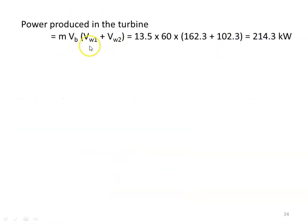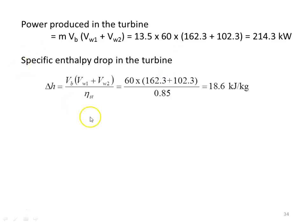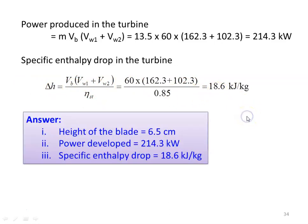Power produced by the turbine: P = m × Vb × (Vw1 + Vw2) = 10.5 × 60 × (162.3 + 102.3) = 214.3 kW. For the specific enthalpy drop, using stage efficiency: ΔH = Vb(Vw1 + Vw2) / η_stage = 18.6 kJ/kg. Answers: blade height = 6.5 cm, power developed = 214.3 kW, specific enthalpy drop = 18.6 kJ/kg.